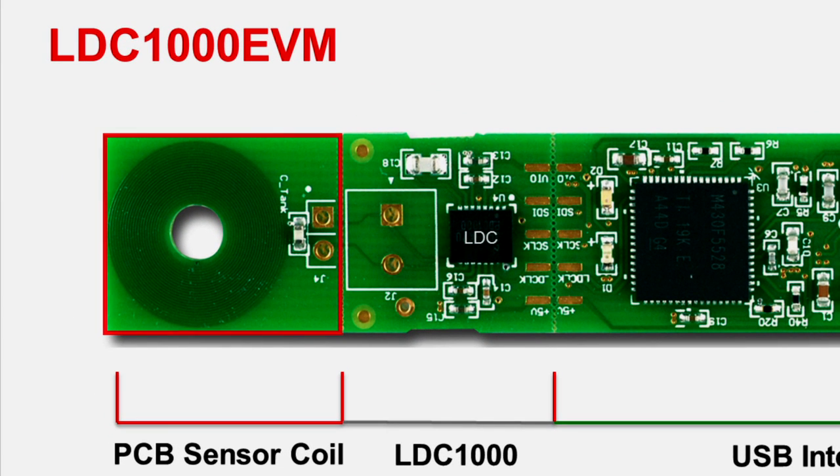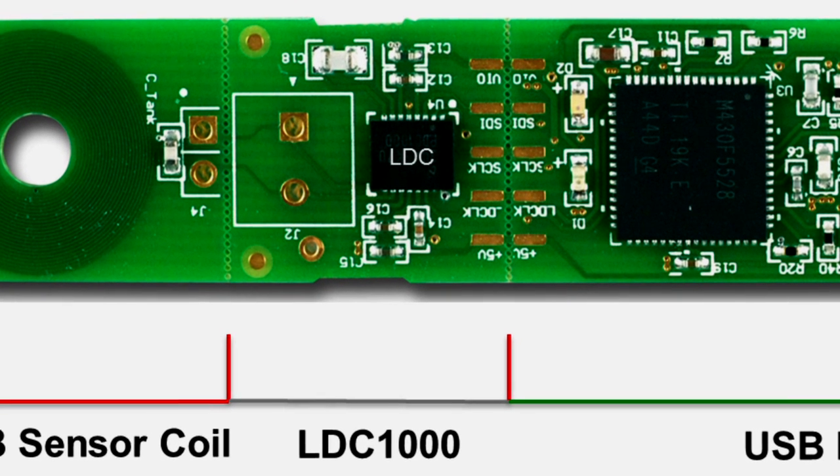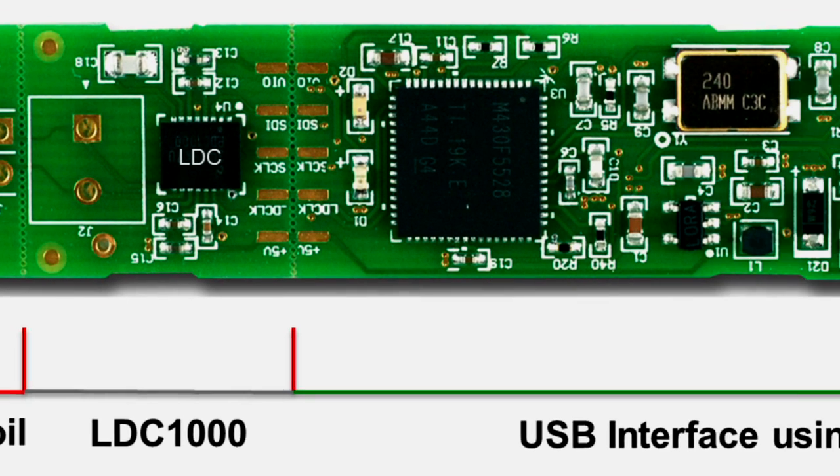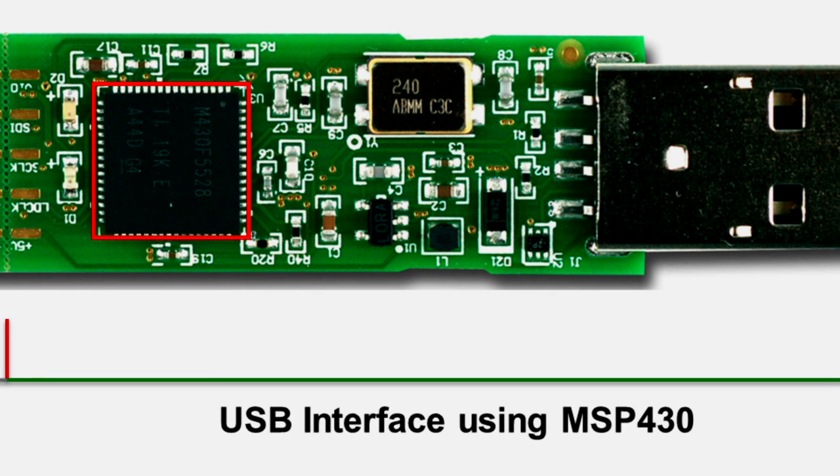The first section has the PCB sensor coil along with the tiny capacitor. The second section has the LDC-1000 IC. The third section is simply a USB interface using the MSP-430.